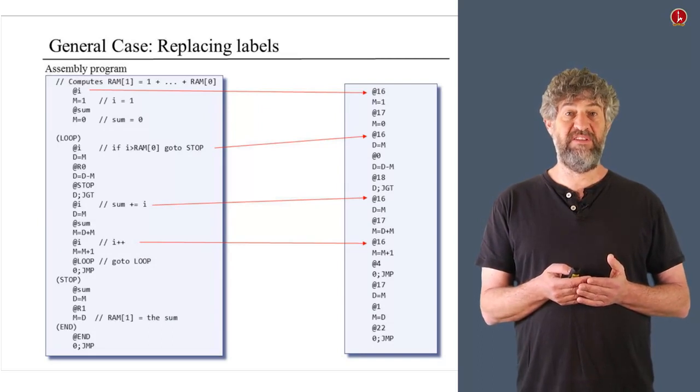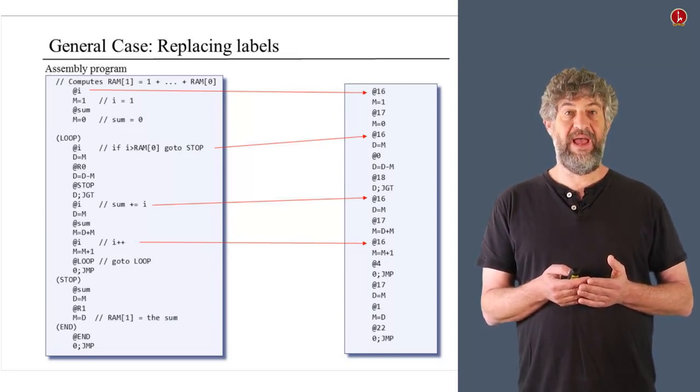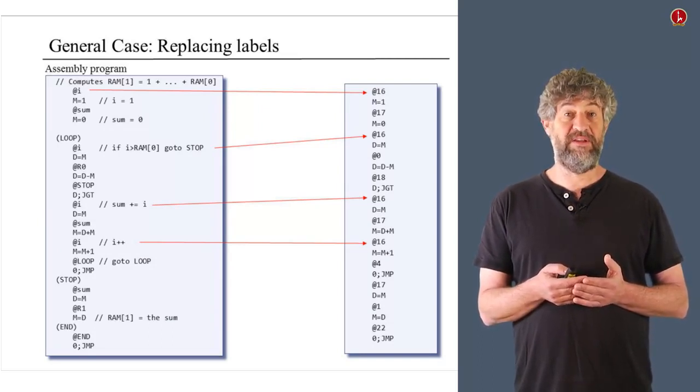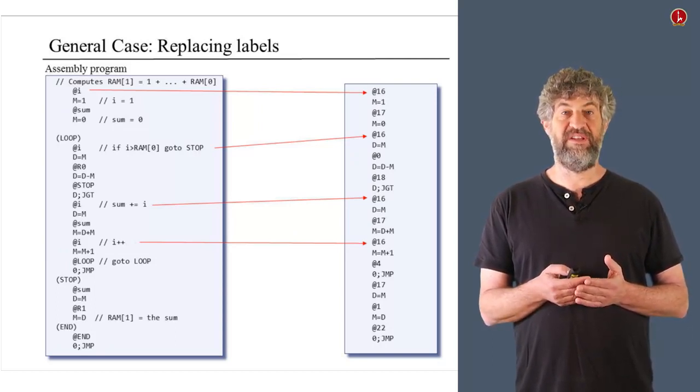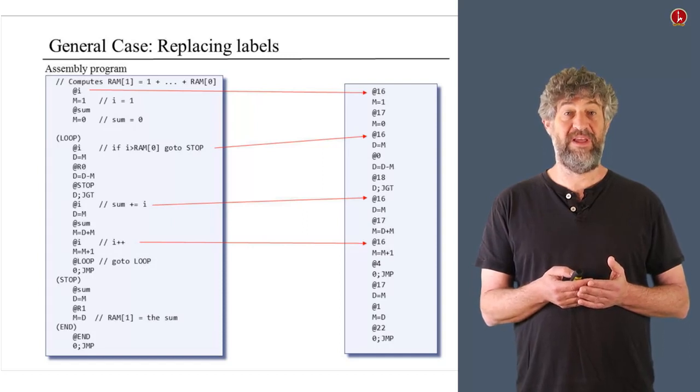So for example, i is the first variable that we see in this program. So whenever, and it's always allocated at place 16. So whenever we see another instance of using the i variable, you need to translate it to the same location.